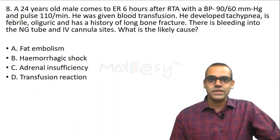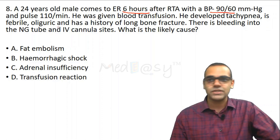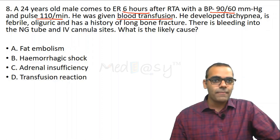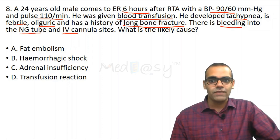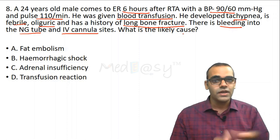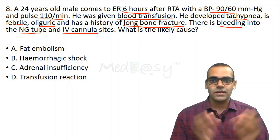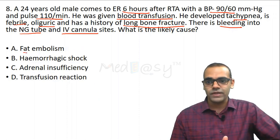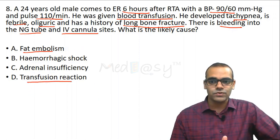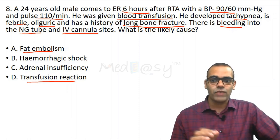Question 8: A 24-year-old male comes to the emergency room 6 hours after a road traffic accident with BP 90/60 and pulse 110/min. He was given blood transfusion, then developed tachypnea, fever, oliguria, and bleeding into the nasogastric tube and IV cannula sites, with a history of long bone fracture. What is the likely diagnosis?